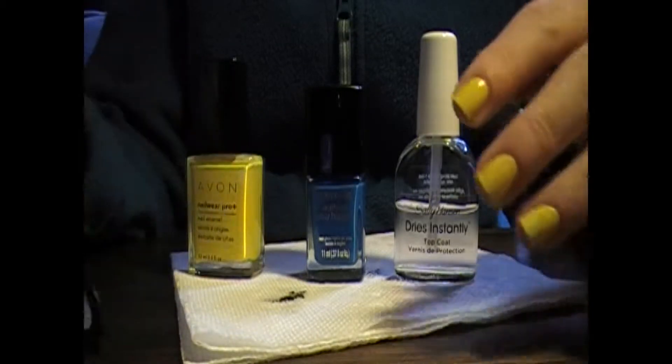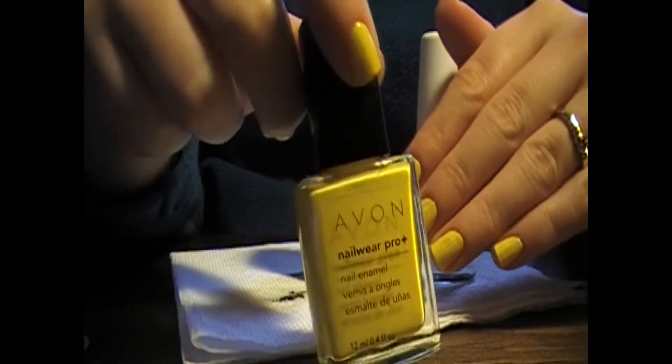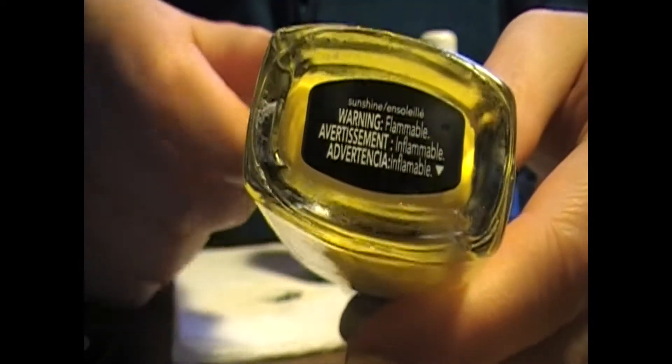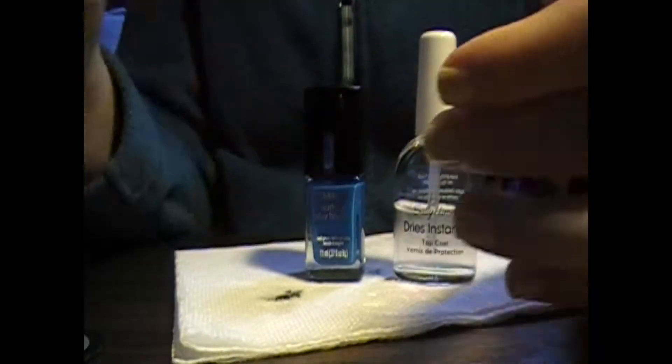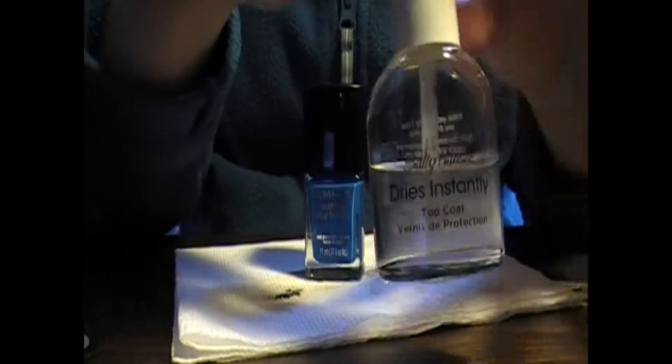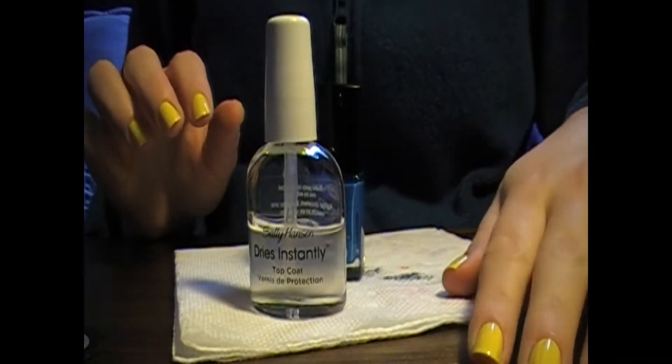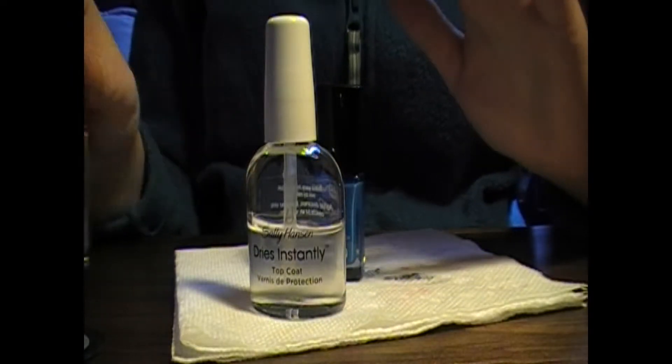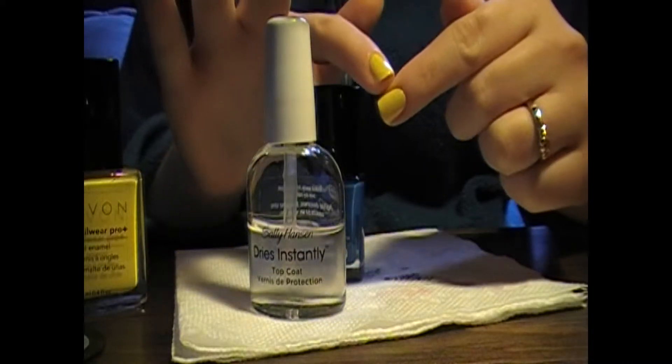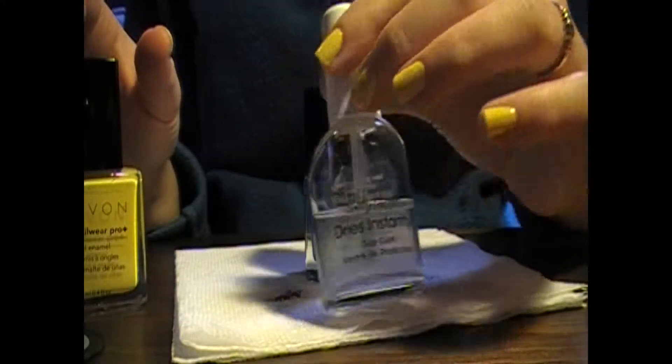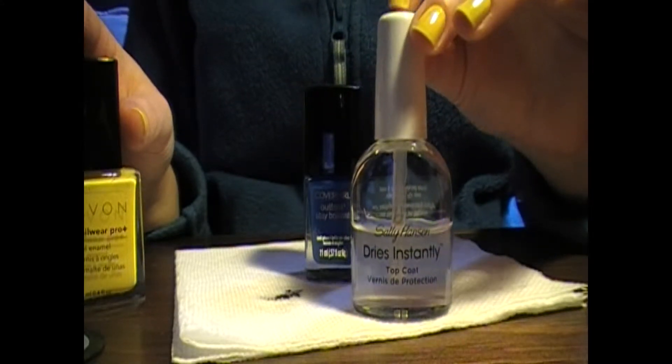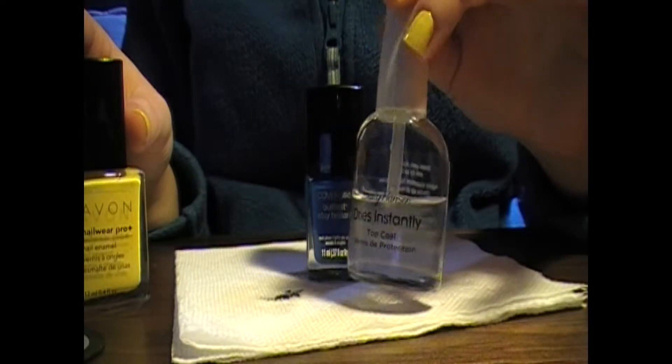So I already put on two coats of Avon's Sunshine. I don't know if you can see it. It's tiny writing at the top, but whatever. And then I put on one coat of Sally Hansen Dries Instantly because if you don't let the base color dry quite enough and then put on tape and then rip the tape off, sometimes it will pull up your color. So if you put a coat of this on top or just a top coat and let it dry sufficiently, it should protect your base color from pulling up.